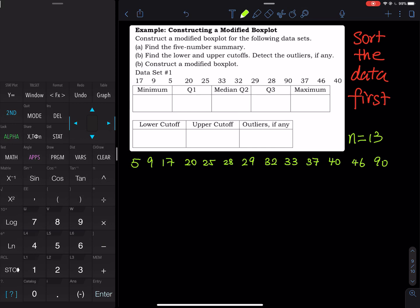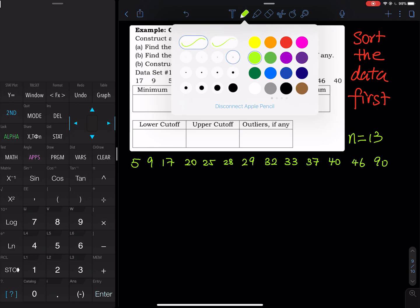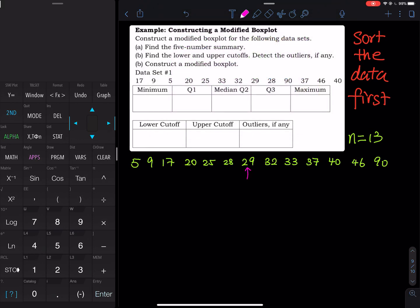So the median, where is the median? The median is the seventh entry. So let's use a color to cut this up. So this is the seventh entry. So this is my Q2. And then I have my minimum, and then I have my maximum. On the left-hand side of Q2, we have six entries. Six entries on the right-hand side. So this will be my Q1, and then this will be my Q3. So that is 17 plus 20 divided by 2 equals to 18.5.